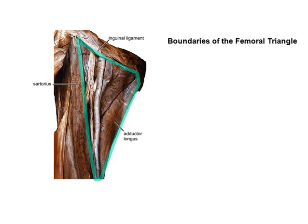The femoral triangle is bounded by the inguinal ligament above, the medial border of the adductor longus medially, and the medial border of the sartorius muscle laterally.